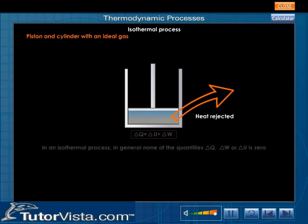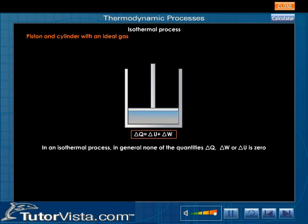In an isothermal process, in general, none of the quantities delta Q, delta W, or delta U is zero, where Q is the heat energy, W is the work done, and U is the internal energy.